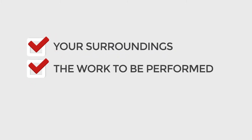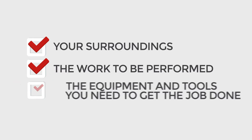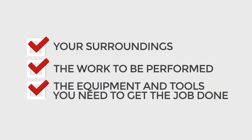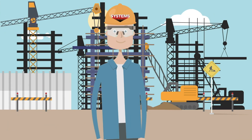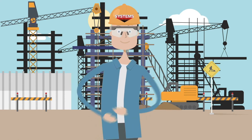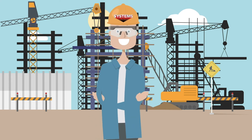JHAs require you to review your surroundings, the work to be performed, and the equipment and tools you need to get the job done. By identifying the health and safety hazards associated with a given task, you can put controls in place to prevent injuries and illnesses.